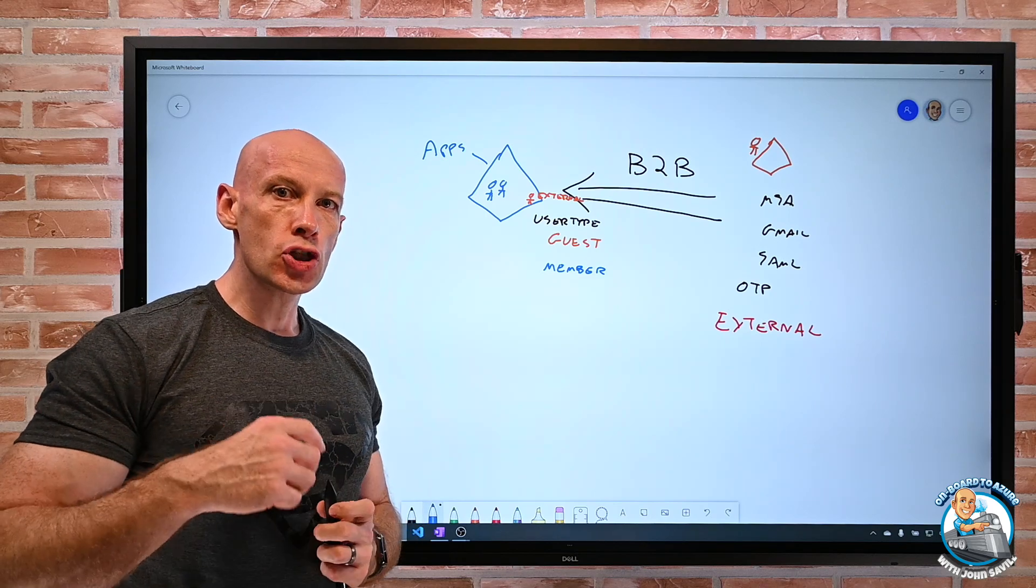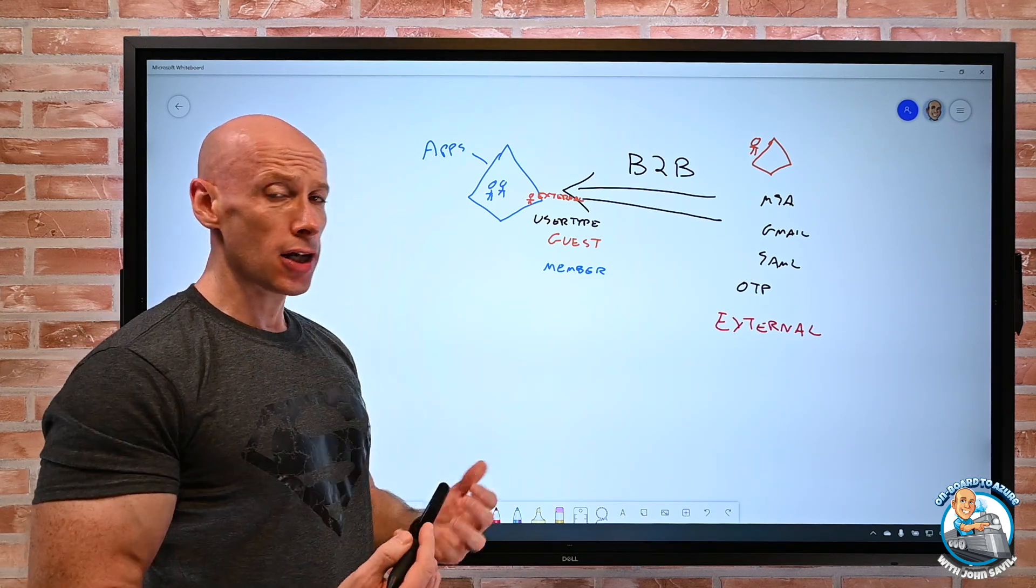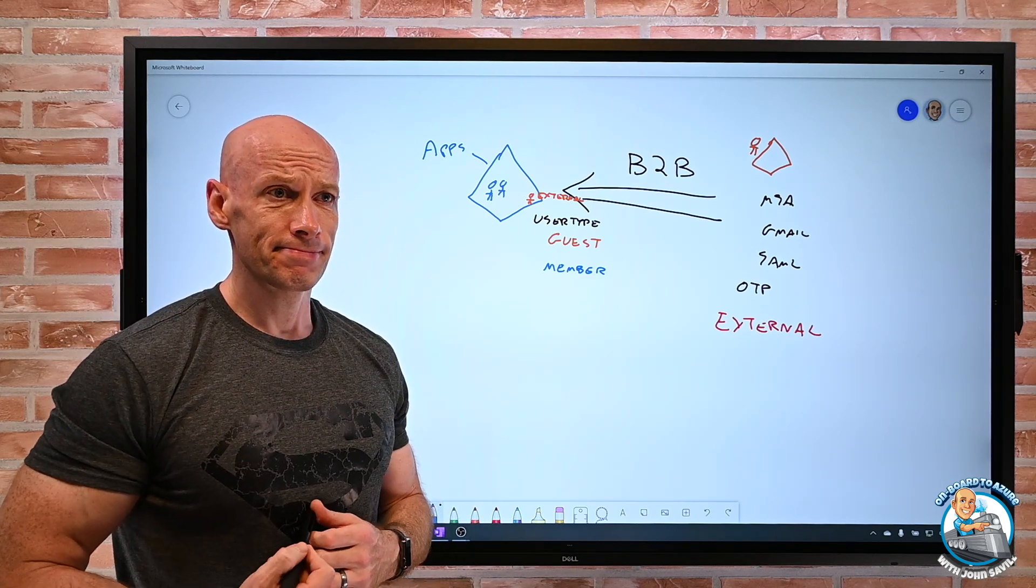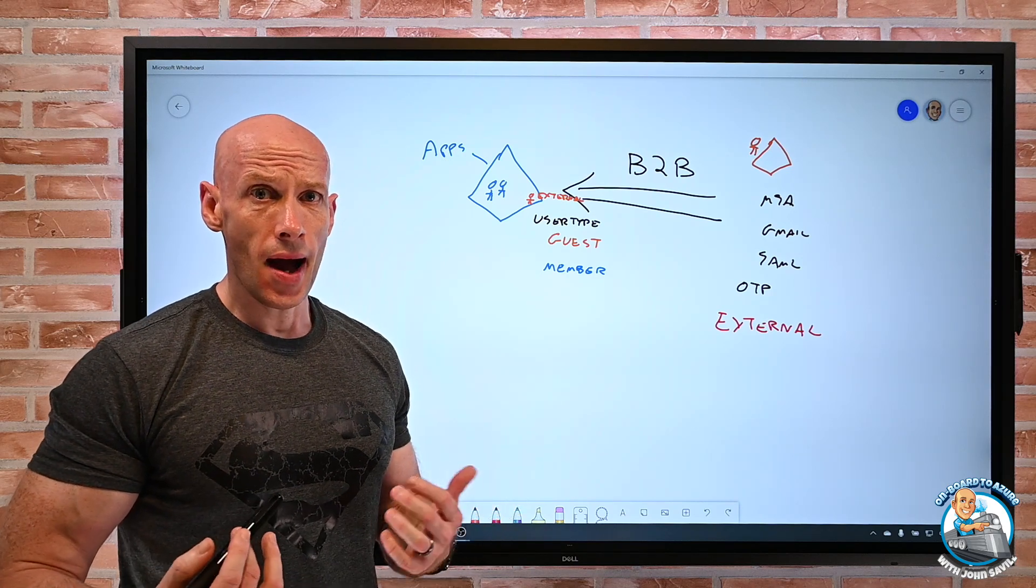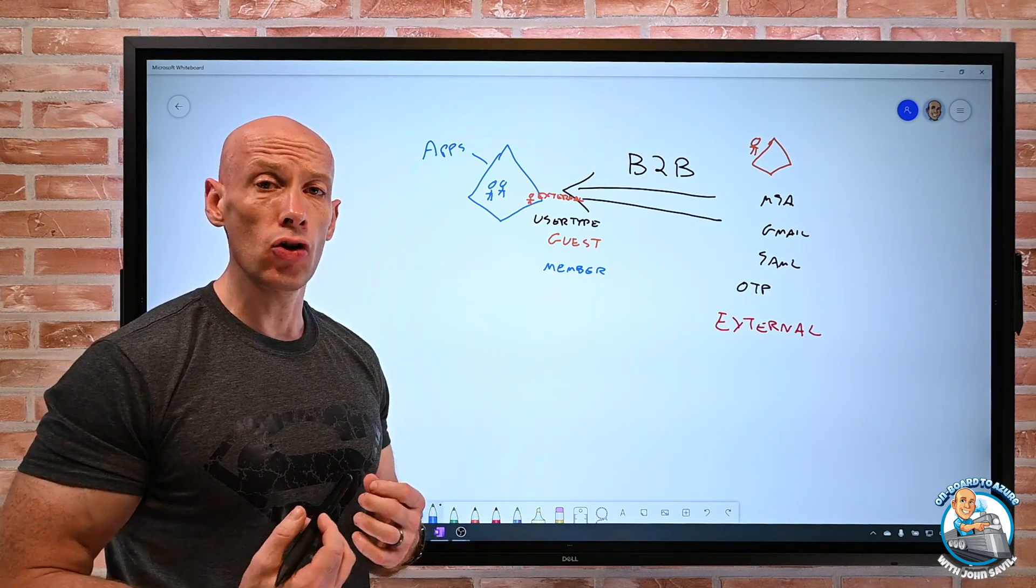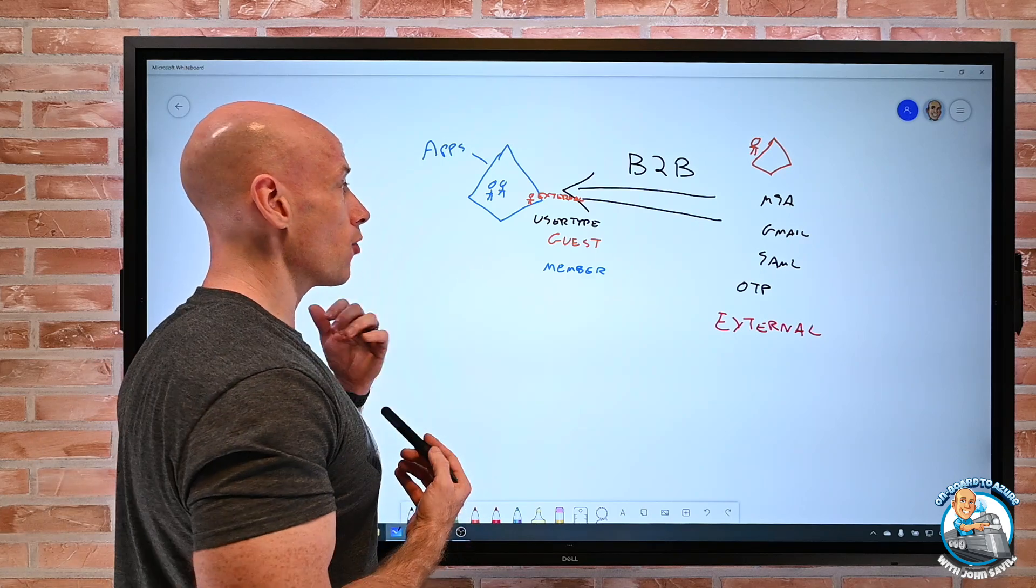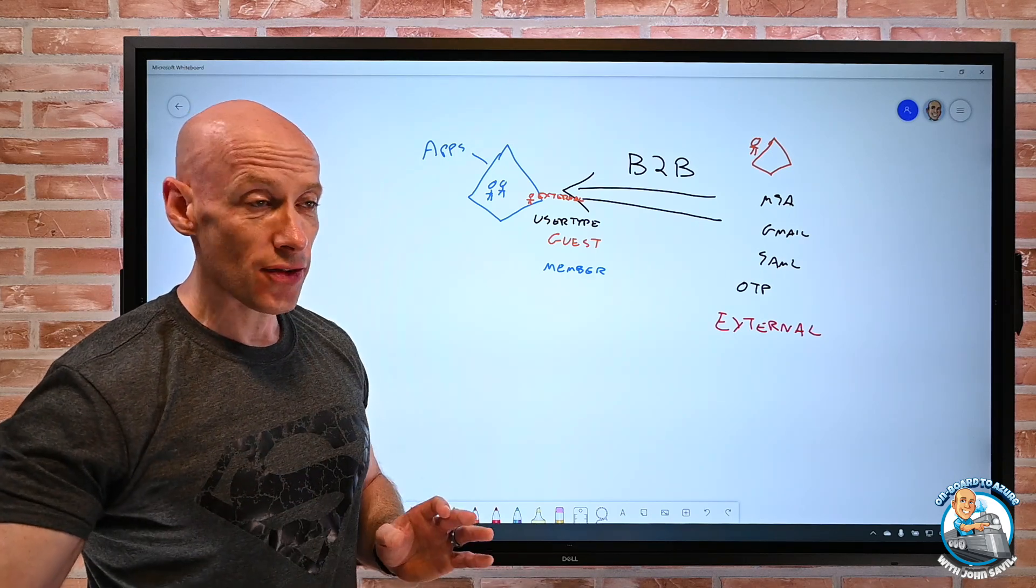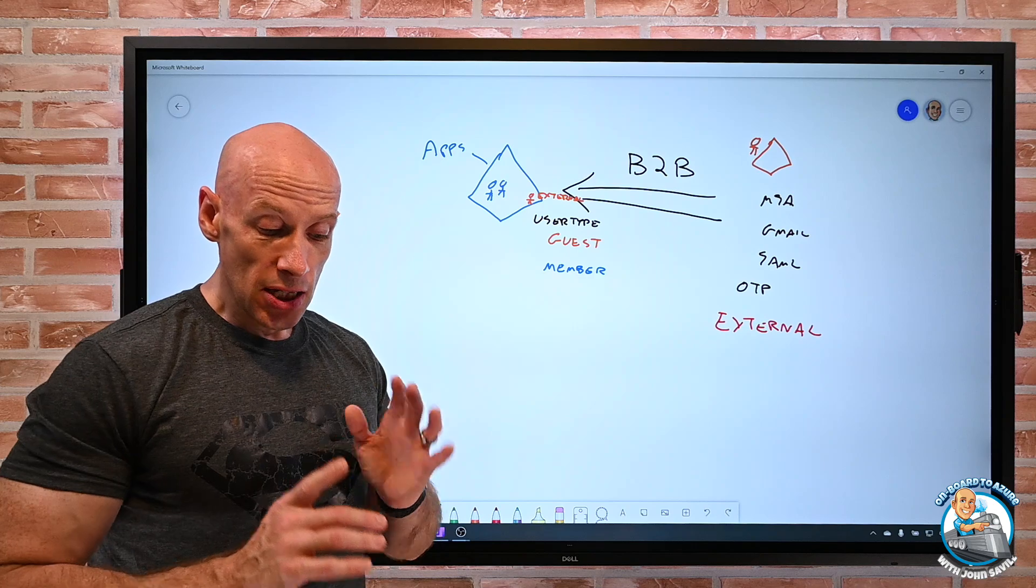So there's now a restricted option. That says I can look at my object. And that's it. I can't. Even if I know the UPN. I can't look at membership of groups. I can't look at other objects. I can't do any of that stuff. And that's actually what I'm going to focus on.